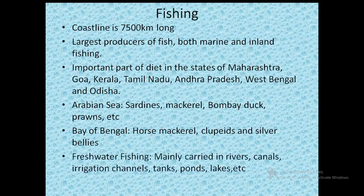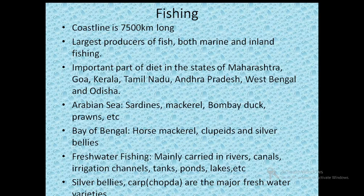Freshwater fishing, also known as inland fishing, accounts for nearly 60% of the total annual production of fish — marine fishing accounts for 40% and freshwater fishing for 60%. This freshwater fishing is mainly carried out in rivers, canals, irrigation channels, tanks, ponds, lakes, etc. The major freshwater fish varieties are silver bellies, carp and chopda.